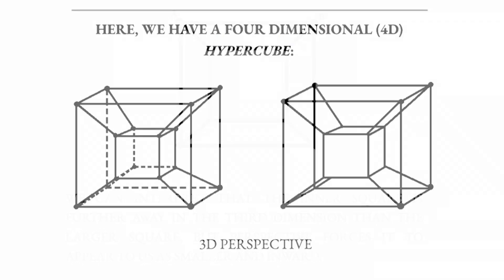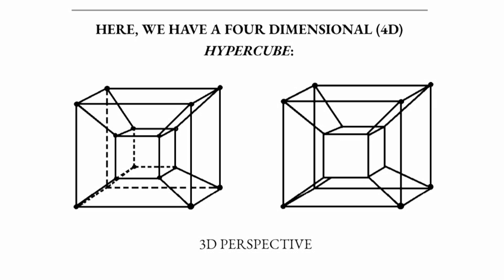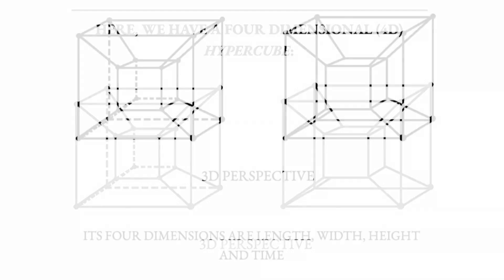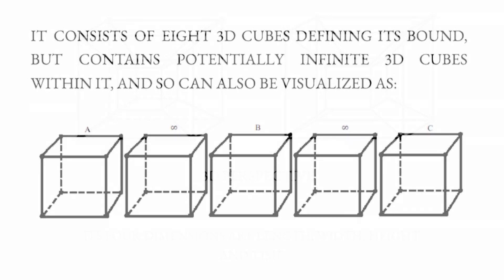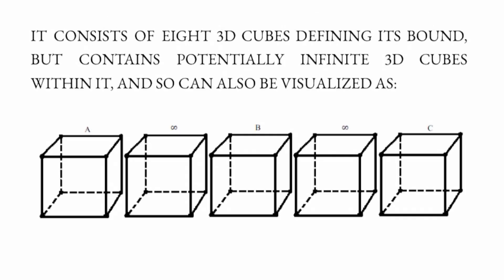Here we have a four dimensional hypercube. Its four dimensions are length, width, height and time. It consists of eight three dimensional cubes defining its bound, but contains potentially infinite three dimensional cubes within it, and so can also be visualised as such.